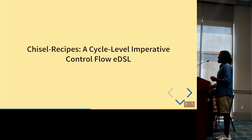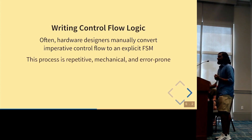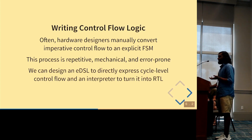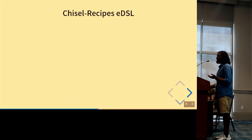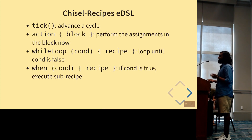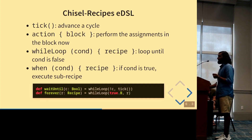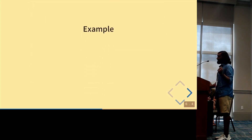The third EDSL is Chisel Recipes — a cycle-level imperative control flow EDSL. Normally we manually convert imperative control flow down to explicit FSM representations, a very repetitive, mechanical, and error-prone process. This EDSL lets you directly express cycle-level control flow, with an interpreter to turn it into RTL. It is composed of basic primitives: advancing the cycle, performing combinational assignments, while-loop constructs, and sub-recipe conditional execution. Since these are regular data types in Scala, you can write combinators on them — functions that take recipes and return new recipes.